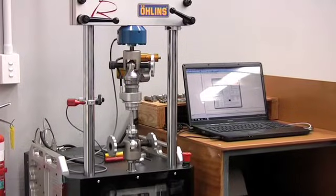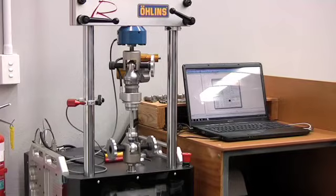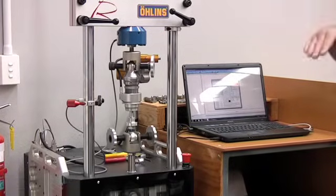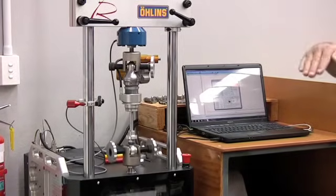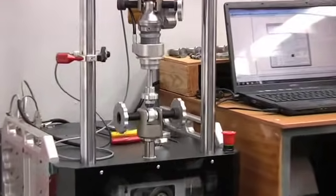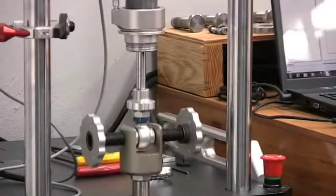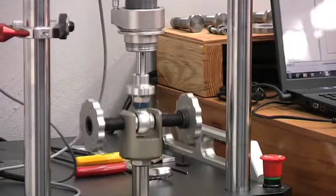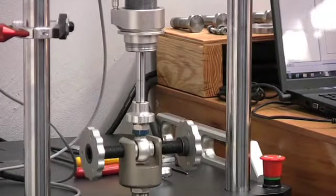Now running at 20 millimeters per second. These velocities basically simulate what we call ride height squat control, initial ride height control. Now running at 30 millimeters per second. At that speed, it's still running on the bleeds; it's not opening the shim stacks.